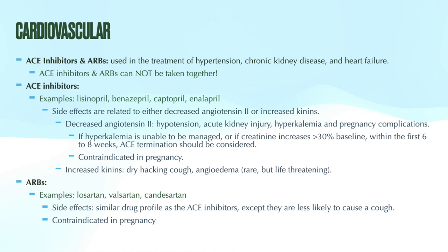ACE inhibitors all end in -pril, P-R-I-L. Common examples are lisinopril and captopril. ARBs have a very similar drug profile to ACE inhibitors but are less likely to cause that dry hacking cough. If a patient experiences the cough on an ACE inhibitor, you can switch them to an ARB. ARBs all end in -sartan, S-A-R-T-A-N — examples include losartan and valsartan. Both are great drug classes, especially for patients with chronic kidney disease or heart failure. Just remember: don't use them together, and don't use them in pregnant patients.